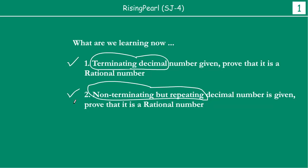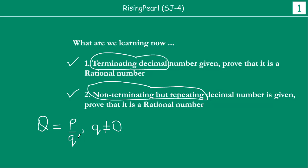In the previous episode, you have seen that when we are talking about decimal expansions of a rational number, there are only two possible outcomes. Rational numbers are basically written in the form P by Q, where both P and Q are integers and Q is not equal to zero. When you try to expand P by Q, there are only two possibilities: you will get a terminating decimal expansion, or you will get a non-terminating but repeating decimal expansion.